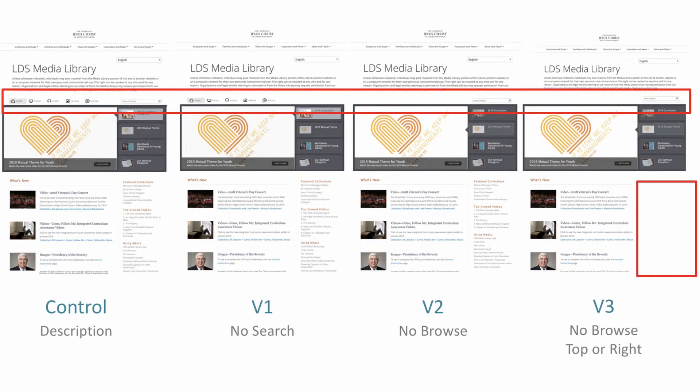As you look at these, you can see that the control has both a browse and a search experience. On variation one, we have removed the search from the page. On variation two, we remove the browse but keep the search. And on variation three, we have removed the browse but also removed the bottom right browse. Now this is a great test because the client had a lot of assumptions about what was important to the visitor.